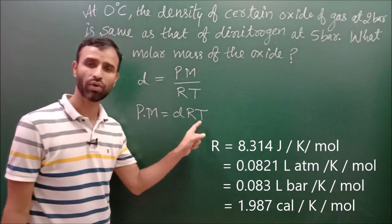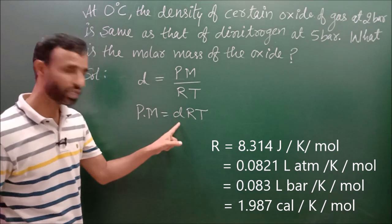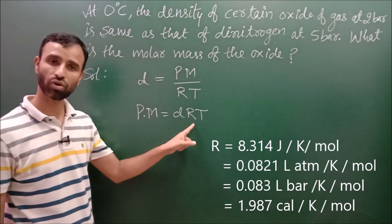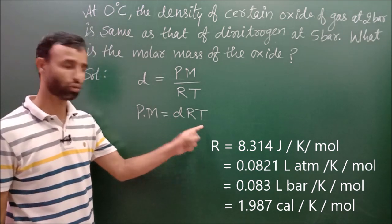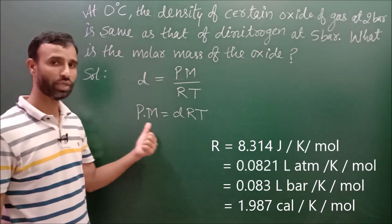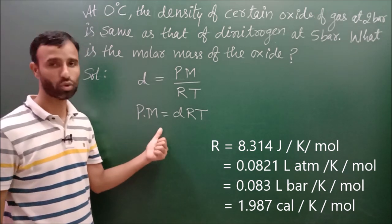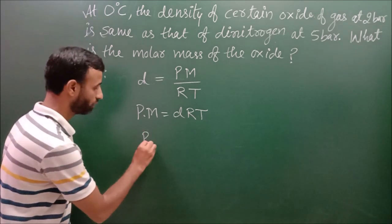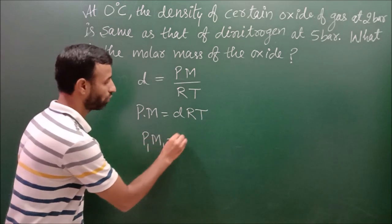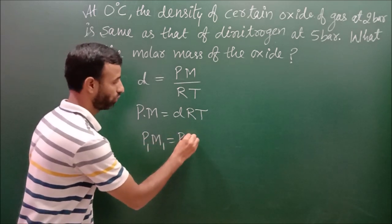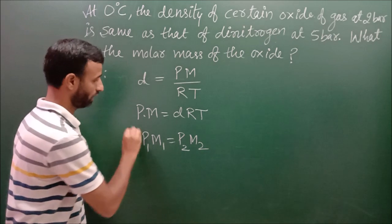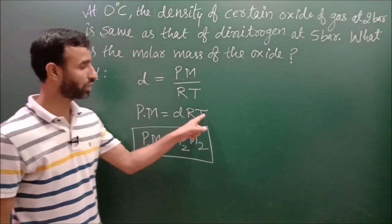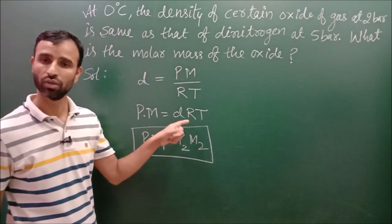But there is no need of R here. D is constant, R is constant, T is constant. So what is left? P and M, pressure and molar mass. So relation is P1M1 equal to P2M2, because temperature and densities are constant.